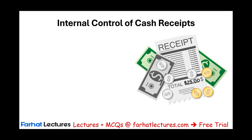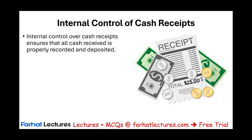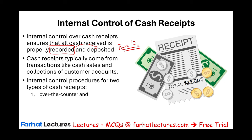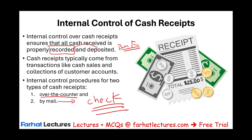Let's discuss the main purpose of internal control over cash receipts: to make sure all cash received is properly recorded and deposited at the bank. If money is not at the bank, there's a risk of it being lost, stolen, or disappearing. Cash receipts for a company typically come from two different places — either over the counter, where someone pays you cash, or by mail, meaning you receive a check. No one mails you cash.